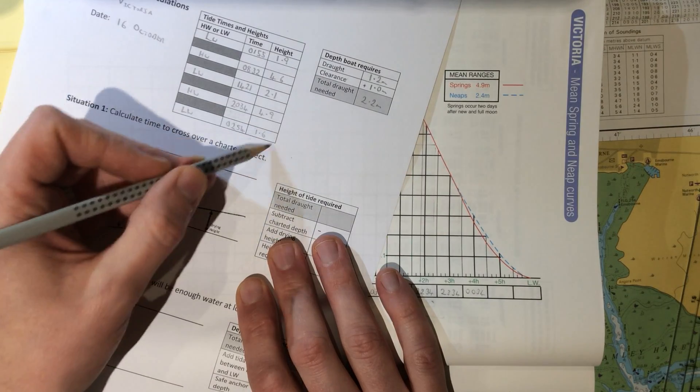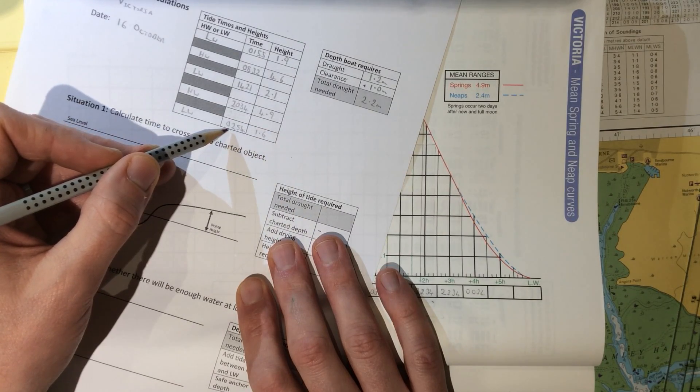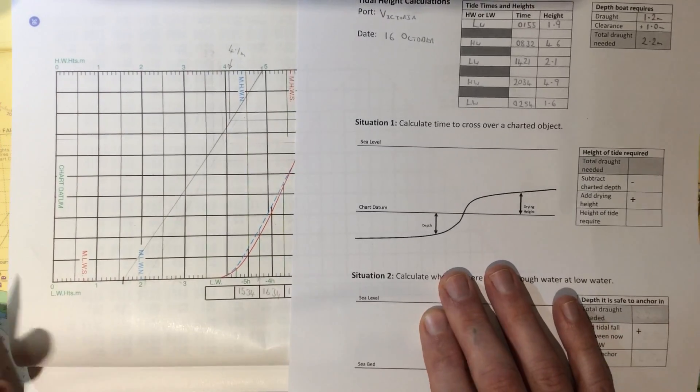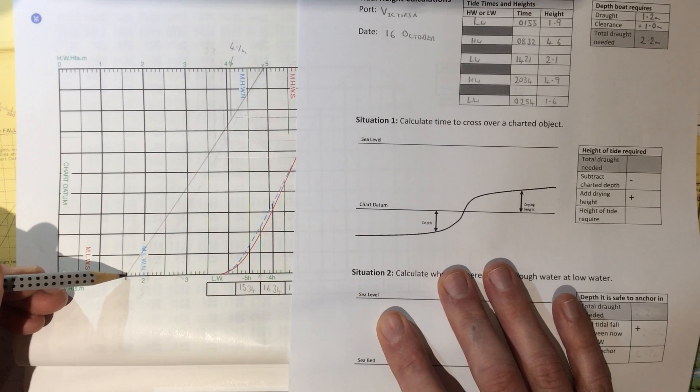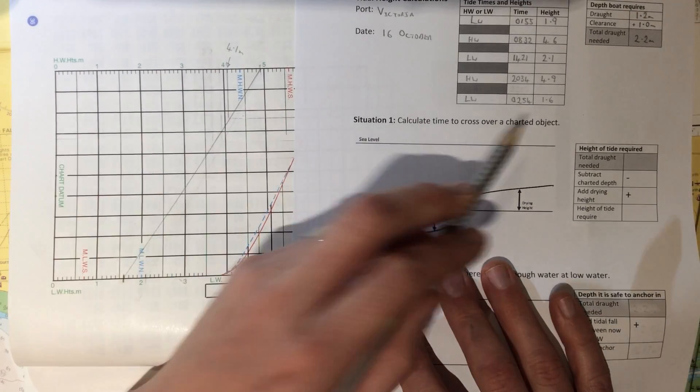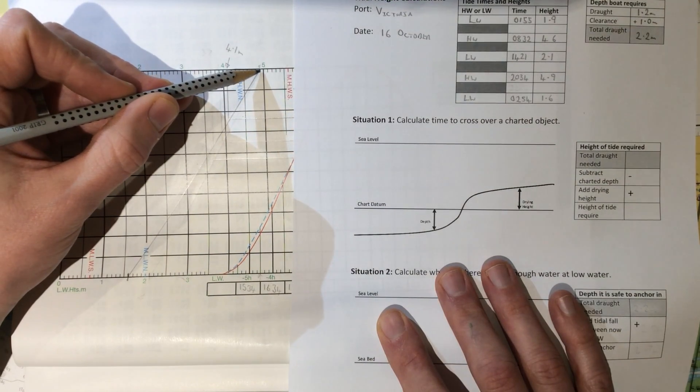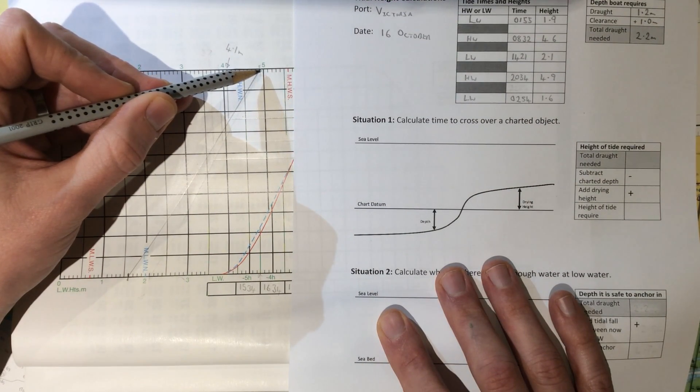So we've taken this from the 17th, the early hours of the 17th of October. The only adjustment we've had to make to our curve is that we've now had to adjust down this line so it goes from 1.6, our low water height, and kept this at 4.9, our high water height.